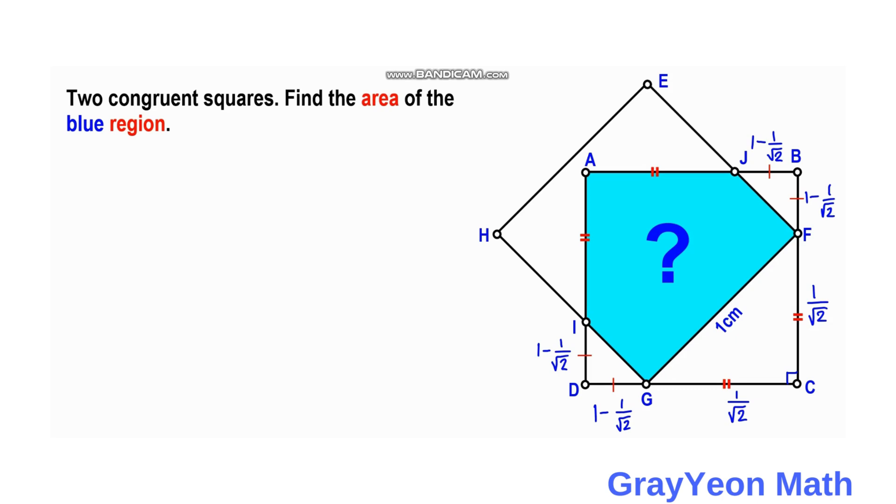So now the area of the shaded region will be simply the area of the square minus the area of these two triangles combined. And these two triangles form with the side length of 1 minus 1 over square root of 2.